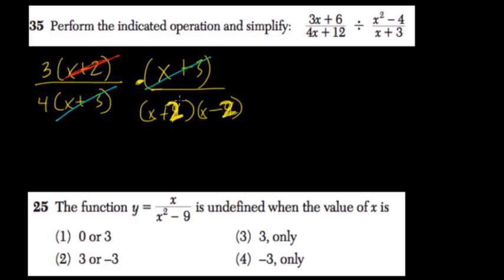x plus 2 is canceled out, and you're left with 3 over 4 times x minus 2.